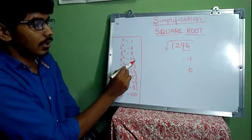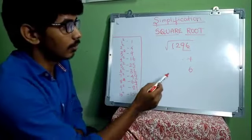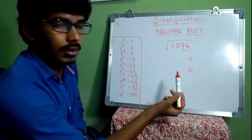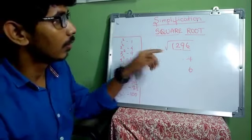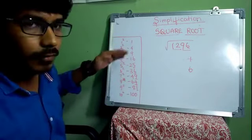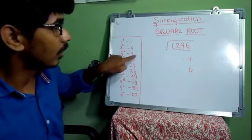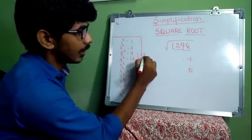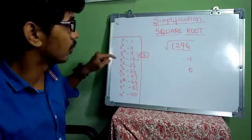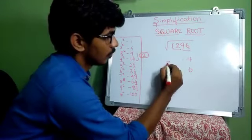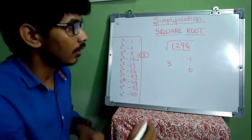Since our unit digit is 6, we write down 4 and 6 as possibilities. Next, look at the remaining digits: 12. Where does 12 fall in the squares table? It comes between 3² = 9 and 4² = 16. So it falls between 3 and 4, and we take the smaller value: 3.